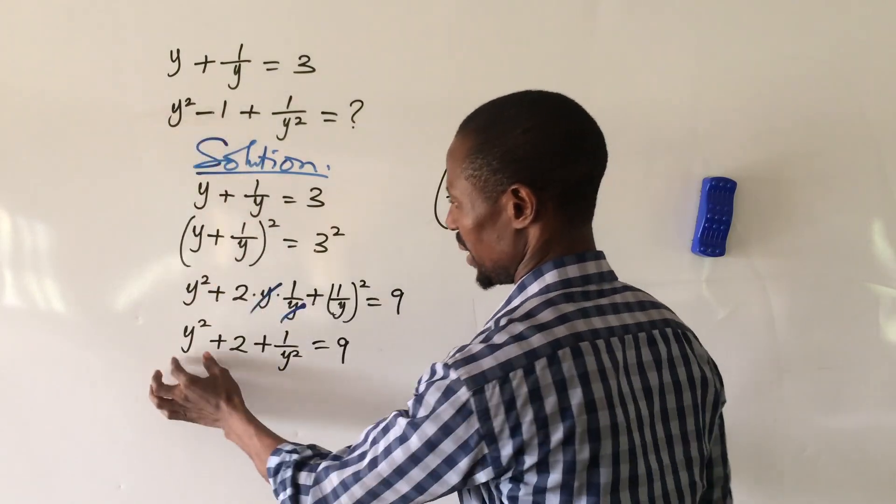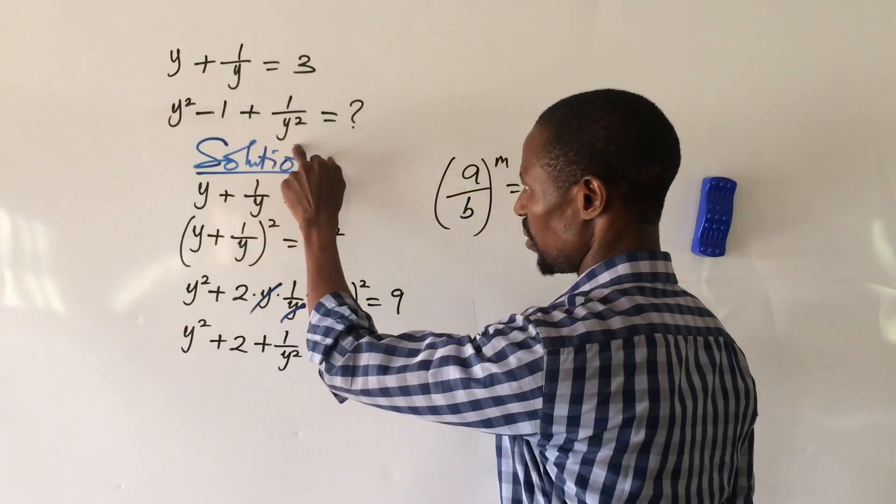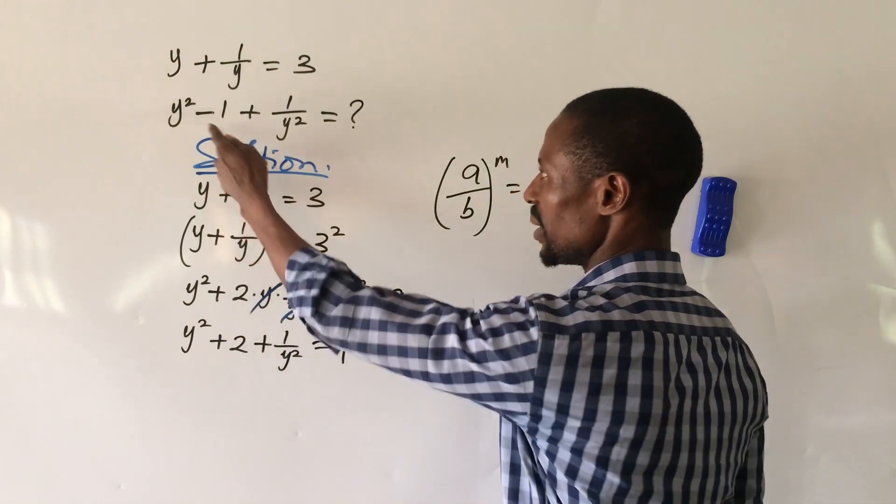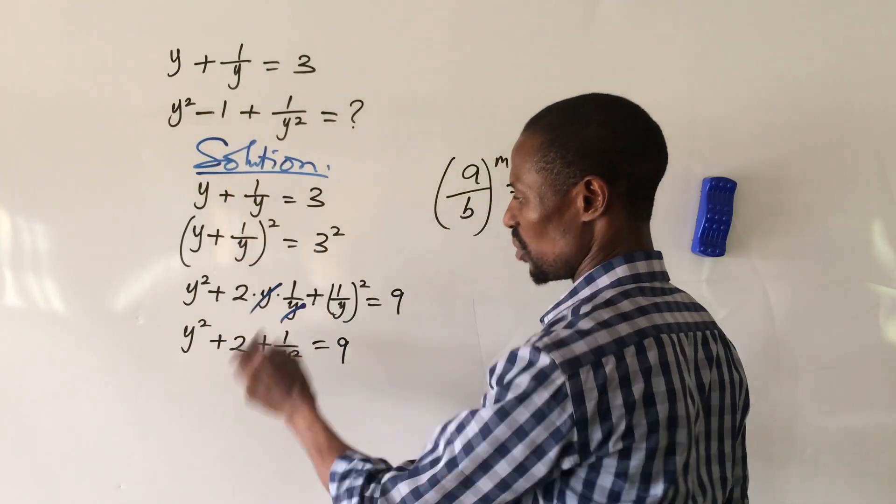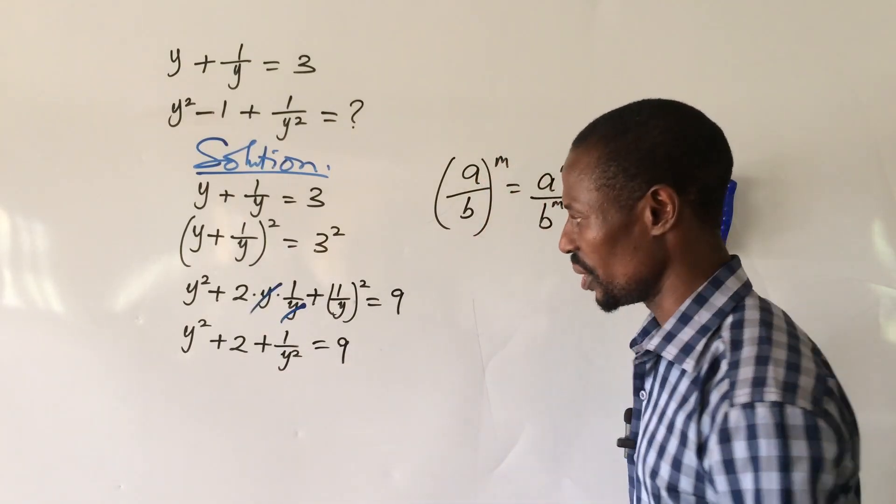We're having minus 1 here, but here we are having plus 2. So what we do here is to subtract 3 from both sides of the equation.